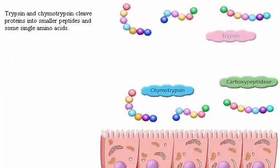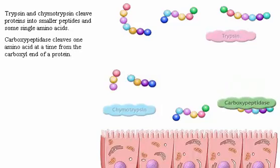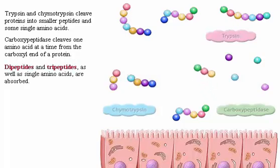Trypsin and chymotrypsin cleave proteins into smaller peptides and some single amino acids. Carboxypeptidase cleaves one amino acid at a time from the carboxyl end of a protein. Dipeptides and tripeptides as well as single amino acids are absorbed.